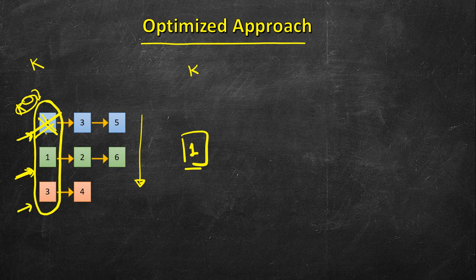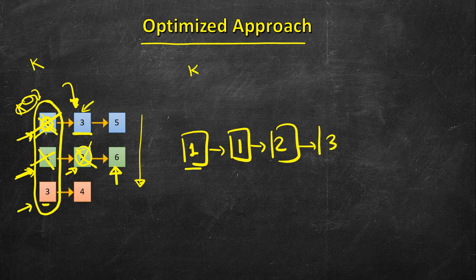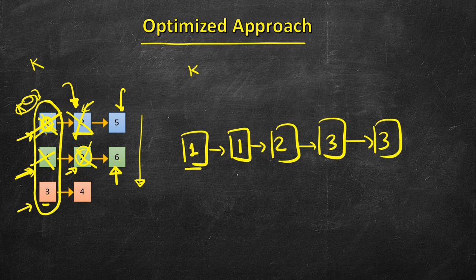Once we pick the minimum, say from the first list, we move its pointer to the next node. The next pick might still come from the same list if its values are smaller than all other heads. We keep comparing the current heads — for example, comparing 1, 3, and 3, the smallest is 1. After adding it, we compare 2, 3, and 4, so 2 is added next, and so on.